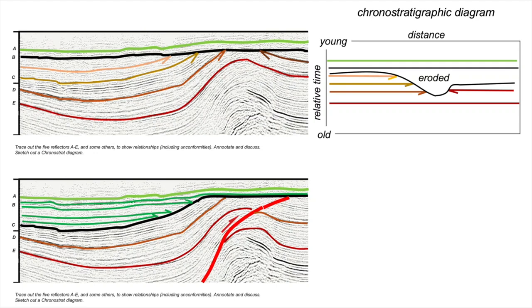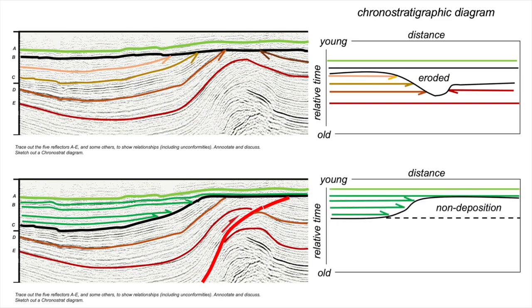What about the second interpretation at the bottom of the screen? Well, this time the green young horizons - our youngest light green horizon goes right across the whole profile, so plots right across our chronostratigraphic diagram. But as we go down in that green package, progressively they pinch out towards the right.